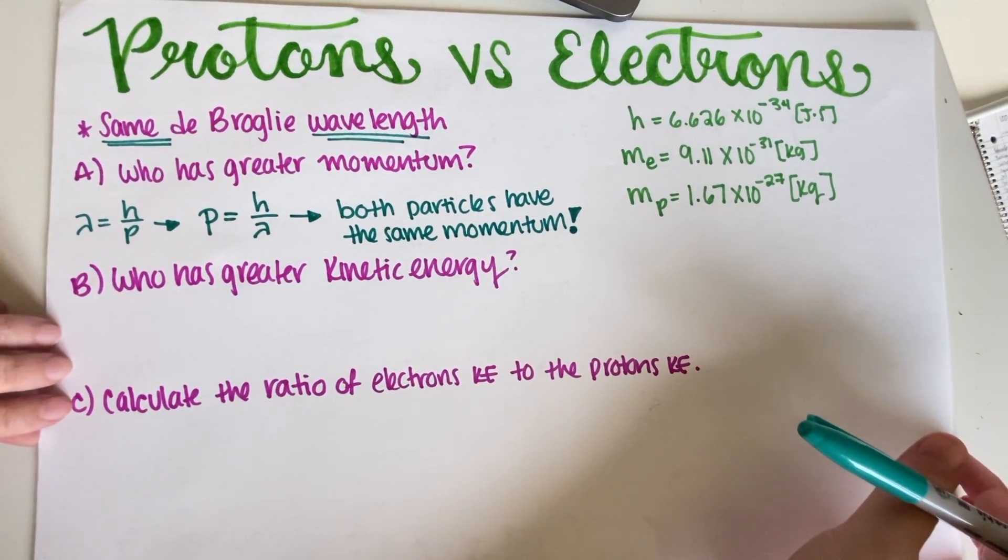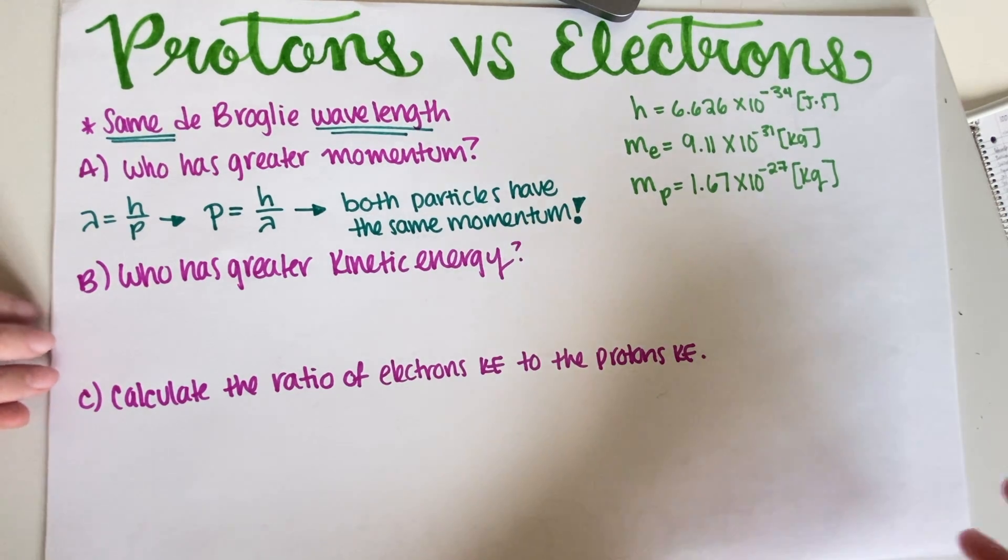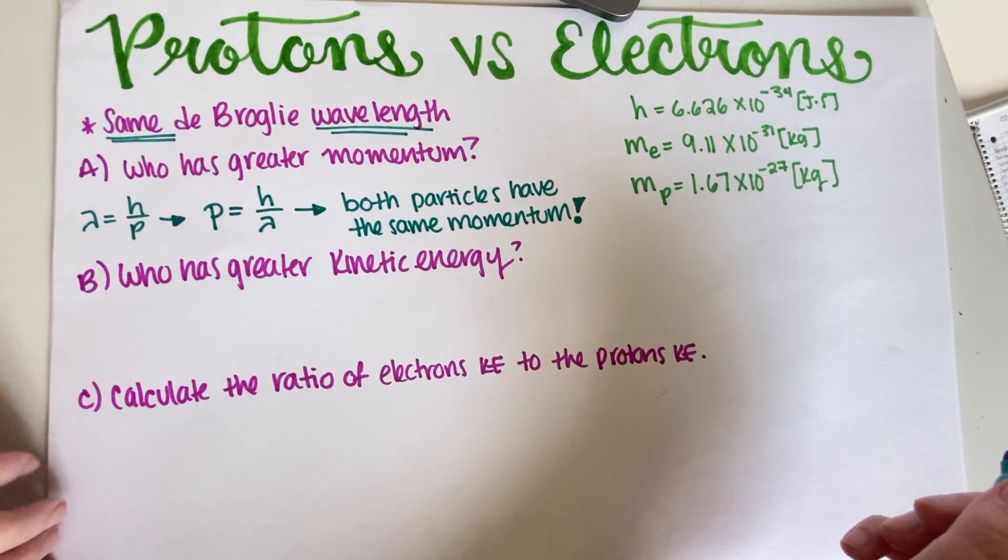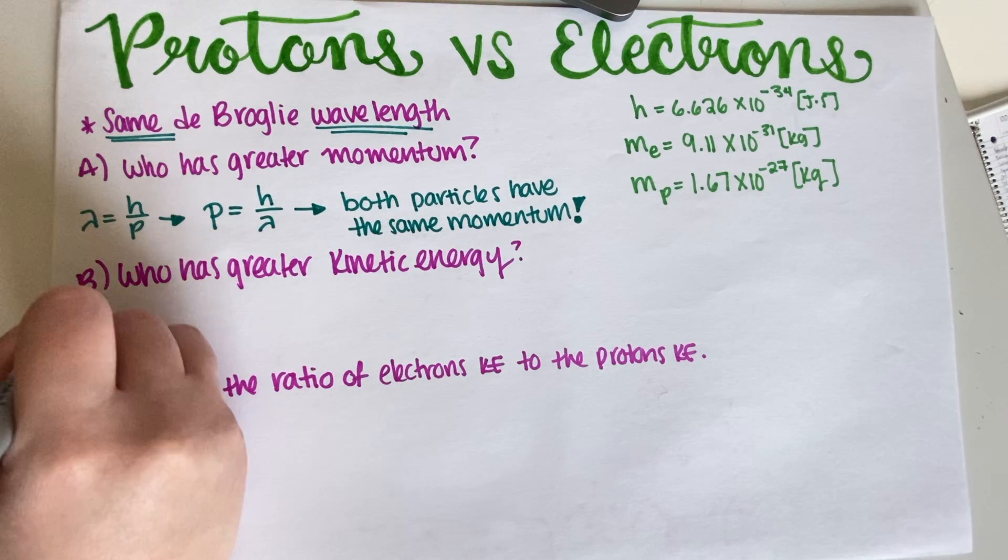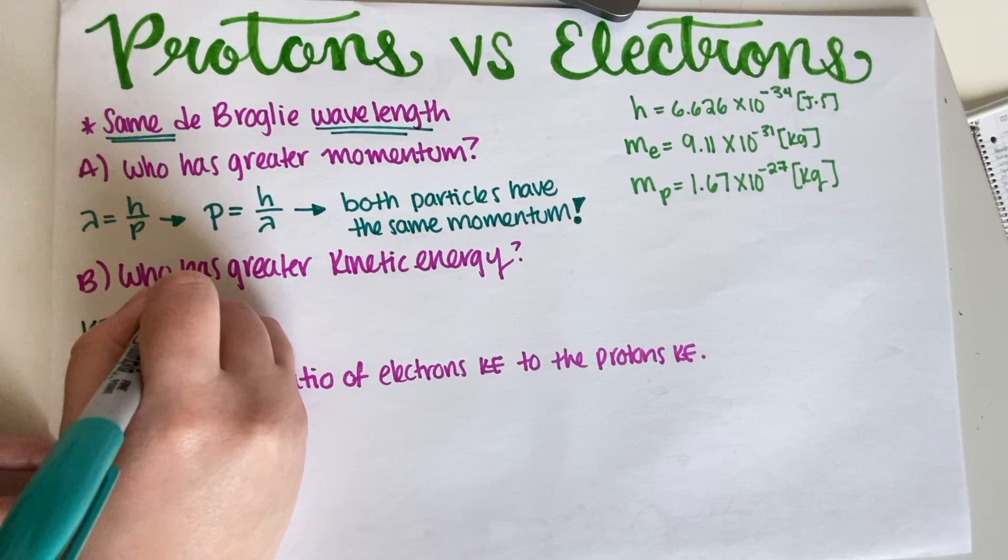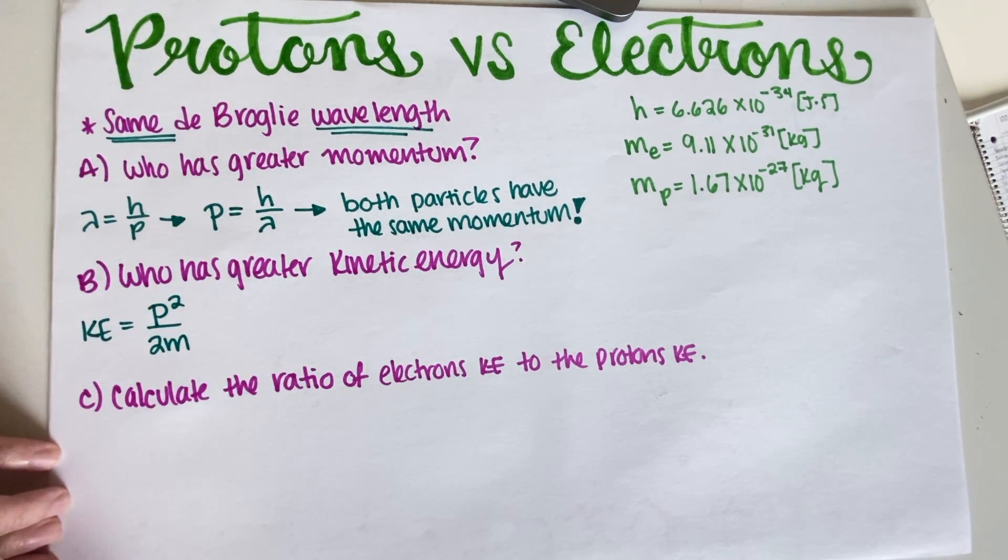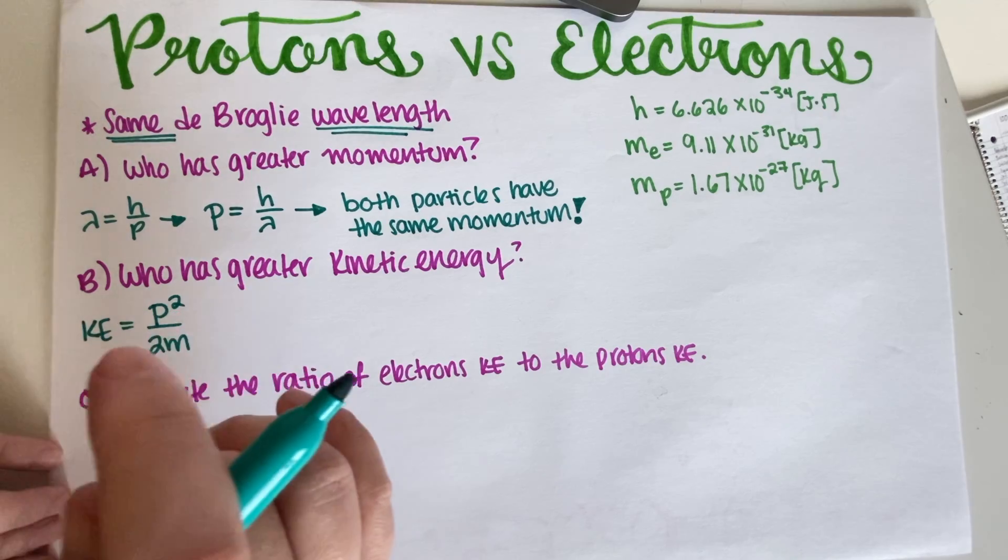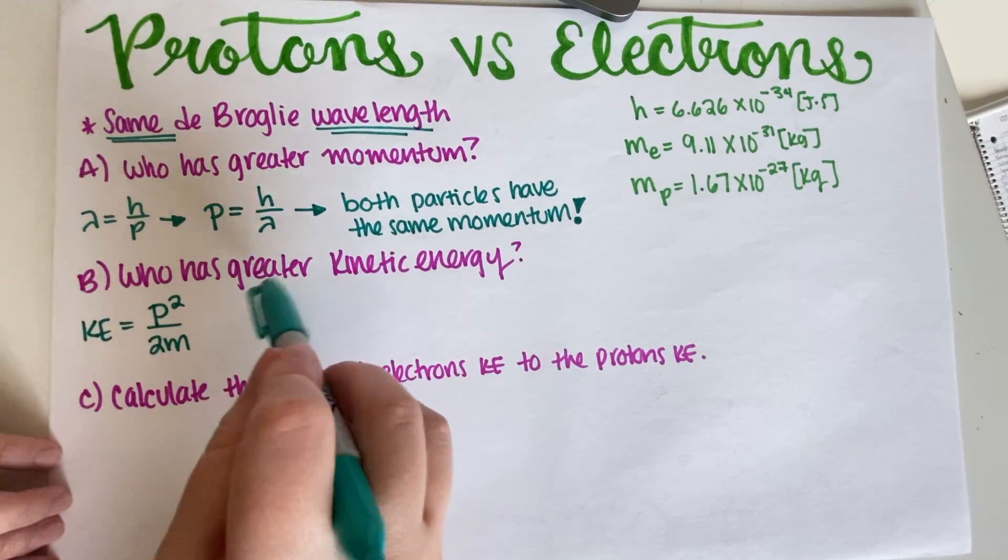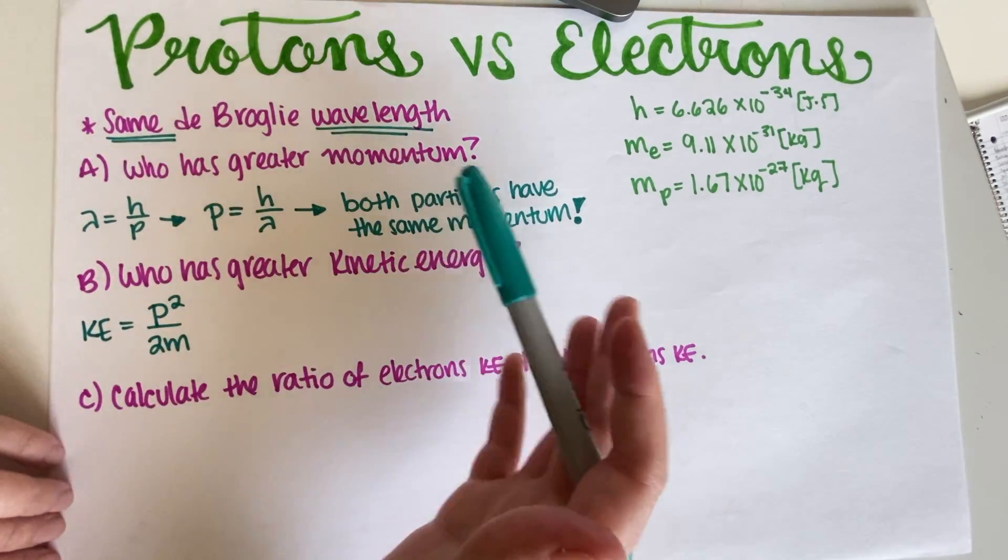So now for the second part: who has a greater kinetic energy? Let's go ahead and see. For kinetic energy we are given the equation P squared over 2m, which follows from mv squared divided by 2. So if you do mv squared divided by 2 and remember the momentum is mv, then you get this equation.